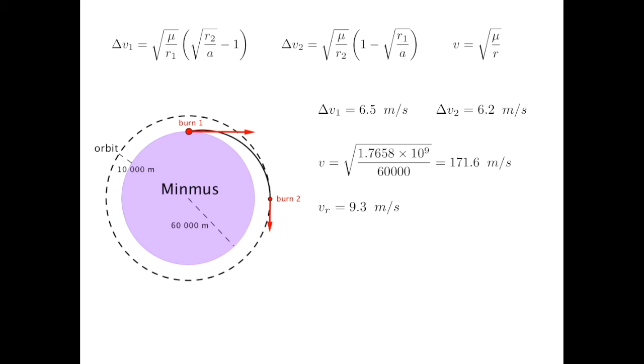Minmus itself is rotating at a speed of 9.3 meters per second at the equator. You can look this number up on the KSP wiki. As we launch to the east, we are already moving at this velocity. To calculate the amount of the burn, we take the orbital velocity we need to get to, subtract the 9.3 meters per second we already have, and then add the first part of the Hohmann transfer to get 168.8 meters per second. Burn 2 is just the second part of the Hohmann transfer, and adding it all up, we get a total required delta V of 175 meters per second.